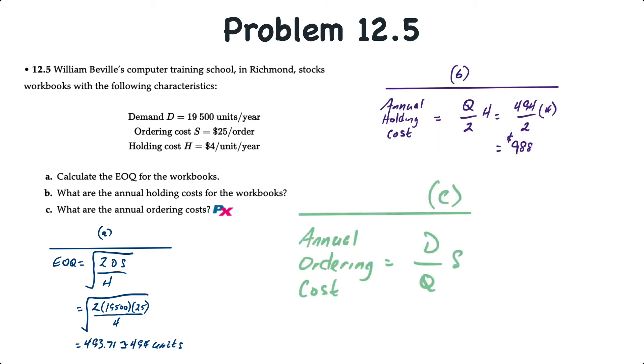For requirement C, to calculate the annual ordering cost, that's equal to D over Q times S. So our demand is 19,500. We divide that by 494 units, and we multiply that by the $25 order cost, and that works out to $987. This 987 is not exactly the same as the 988, because we're using a rounded 494. If we use the exact 493.71 to significant digits, then we would end up with the ordering cost equal to the holding cost.